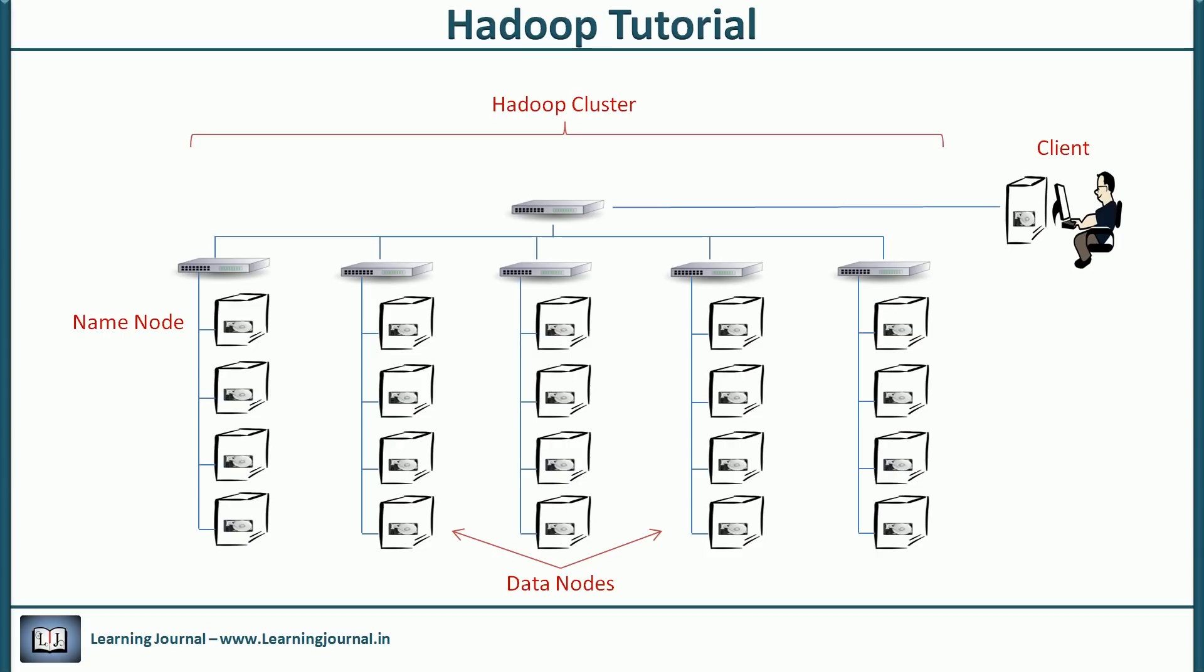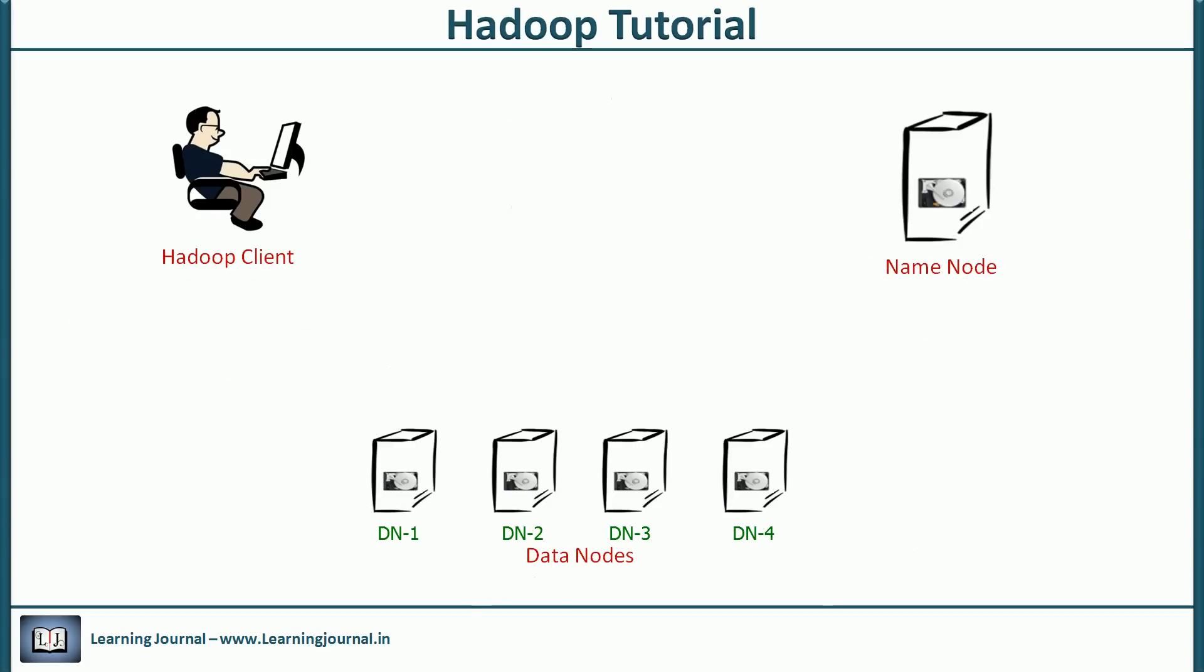There are three actors there. Hadoop client, Hadoop name node and Hadoop data nodes. The Hadoop client will send a request to name node that it want to create a file. The client will also supply the target directory name and the file name. On receiving a request, the name node will perform various checks like directory already exists, the file doesn't already exist and the client has the right permissions to create a file.